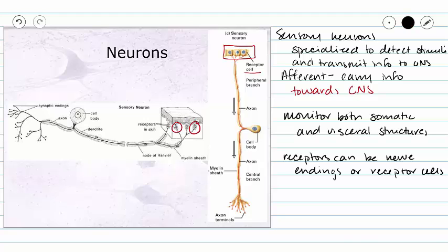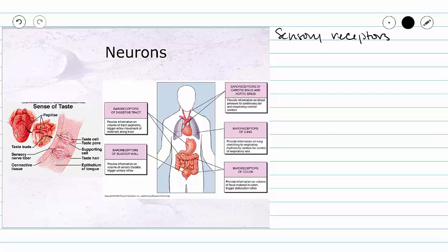Now we're going to take a look at a couple of different types of sensory receptors. One type of sensory receptors is going to monitor our internal systems, such as our digestive, respiratory, cardiovascular, urinary, and reproductive systems. And it's going to monitor our internal senses, such as taste, deep pressure, and pain.